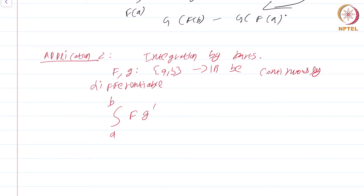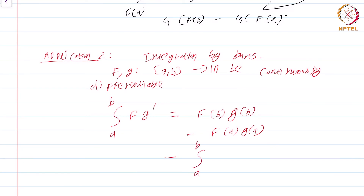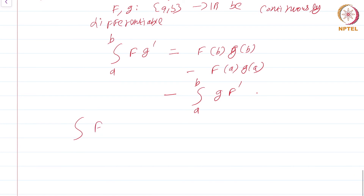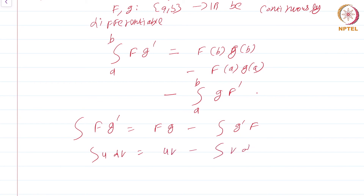As we all know, the answer is: ∫_a^b f g' = f(b)g(b) − f(a)g(a) − ∫_a^b g f'. You are all familiar with this. If you are looking at this and thinking it is different from what you saw in high school, the only reason is that in high school you would have seen it as ∫ f dg = fg − ∫ g df, or integral u dv = uv − ∫ v du.